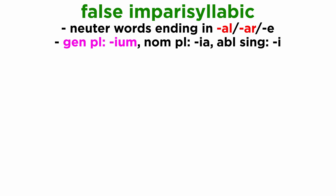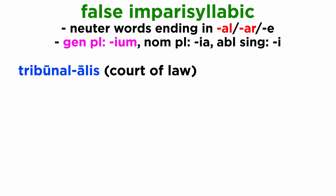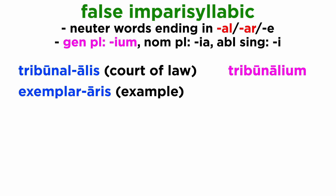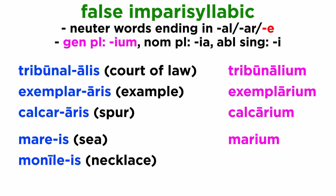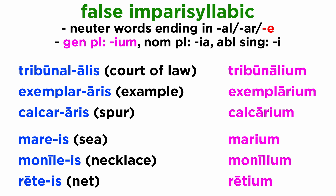The neuter words ending in -al or -ar are not that numerous; it might be easier to memorize them. Tribunal, tribunalis, where the genitive plural will be tribunalium. Exemplar, exemplaris, will give us exemplarium. Calcar, calcaris, will give us calcarium. Among the neuter words ending in -e, you may want to remember: mare, maris, with the genitive plural marium. Monile, monilis, gives us monilium. Rete, retis, gives us retium.